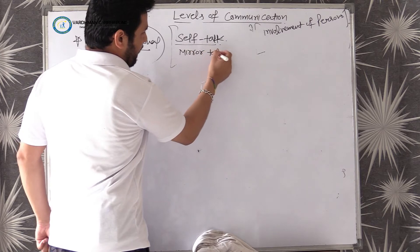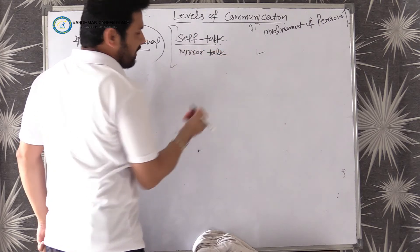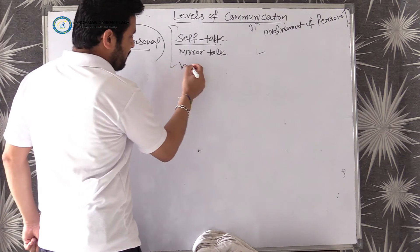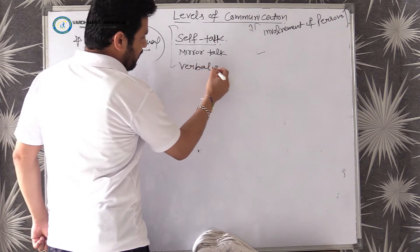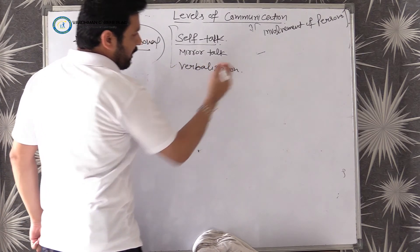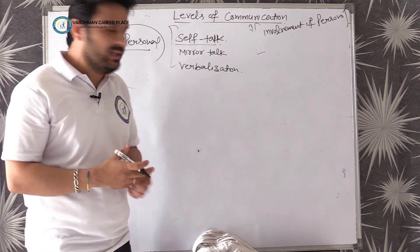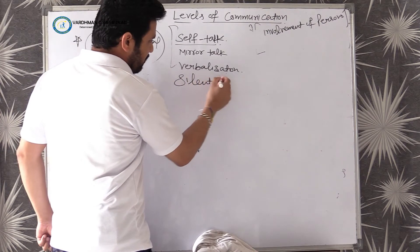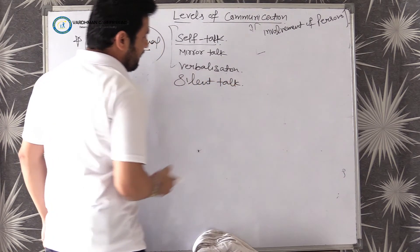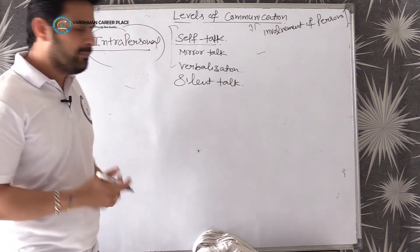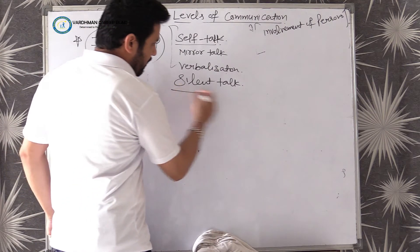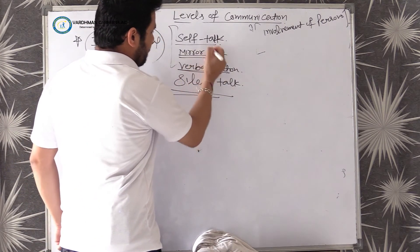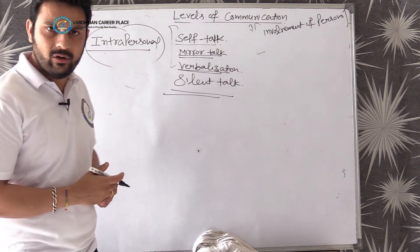For example, if you are talking in front of a mirror, that is mirror talk. Even while you are in the office, intrapersonal communication is there. So we have verbalization, silent talk — these are keywords for students: mirror talk, self-talk, verbalization, and silent talk.